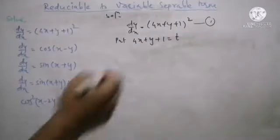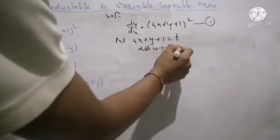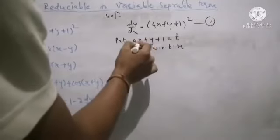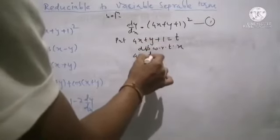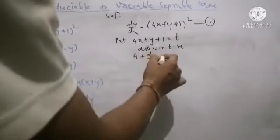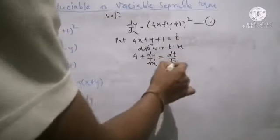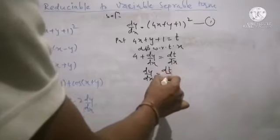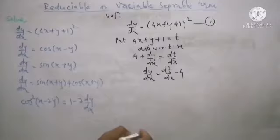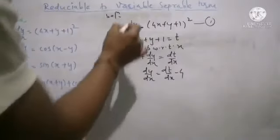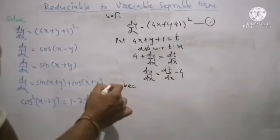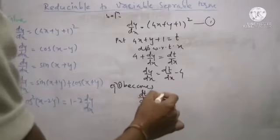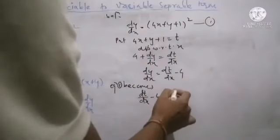Taking differentiation of t equals 4x plus y plus 1 with respect to x: derivative of 4x is 4, derivative of y with respect to x is dy by dx, derivative of constant 1 is 0, and on the right hand side derivative of t with respect to x is dt by dx. We separate dy by dx: it equals dt by dx minus 4. Now in equation 1, we replace the linear term by t and dy by dx by this relation. Equation 1 becomes: on the left hand side, dy by dx is replaced by dt by dx minus 4, which equals on the right hand side t squared.